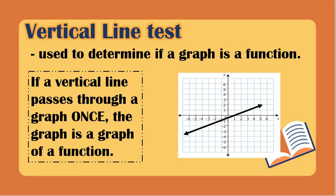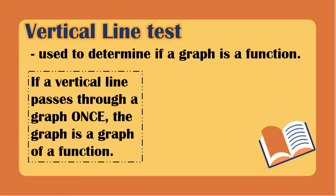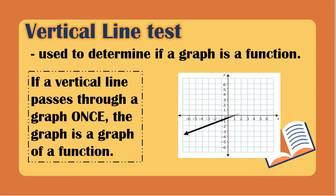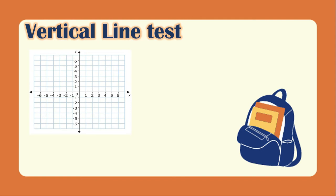The first graph is the graph of a linear equation. We are asking whether the line passes through this graph once. If it does, it is a function; if not, it is not a function. If we draw a vertical line here, it passes through the graph once, so this is a function.